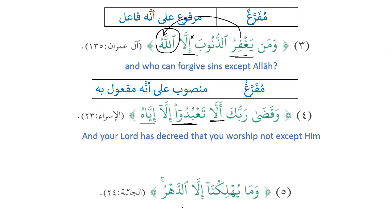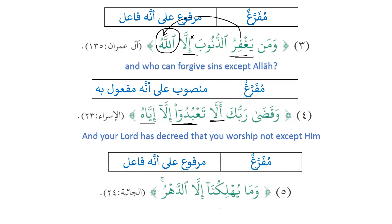'And nothing destroys us except time.' Mustathna minhu is not mentioned — so it's mufarragun. It is marfoob ala annahu fa'il: 'yuhliku' is the verb and 'addahru' is the fa'il — the doer. We remove illa and we can see that addahru is marfoob with dhamma. Also this is ghayru mujab, so there are two possibilities: it can be marfoob or mansoob, but here since it is mufarragun, addahru is marfoob.